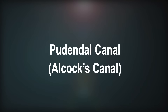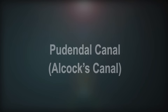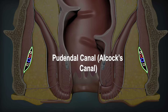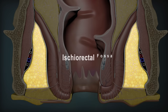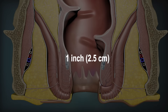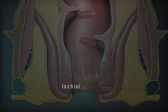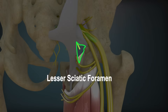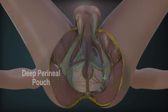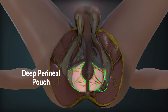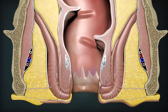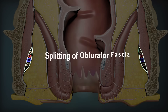Pudendal canal (Alcock's canal): It is a fascial canal present in the lateral wall of the ischiorectal fossa, about 1 inch (2.5 cm) above the ischial tuberosity. It extends from the lesser sciatic foramen to the posterior limit of the deep perineal pouch. The pudendal canal is formed by the splitting of the obturator fascia.